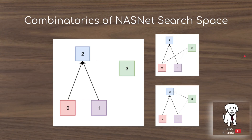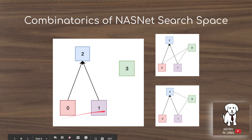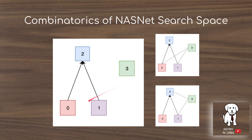Before getting into the evolutionary algorithm, let's understand the combinatorics of the NasNet search space. Imagine zero and one as the input image cloned into two states. If this is the first layer, zero and one are the input image. They could go through a 3x3 convolution or a separable convolution, and together they form hidden state number two. As you construct hidden state three, there are many combinations: you can take one and zero, one and two, or zero and two as input.